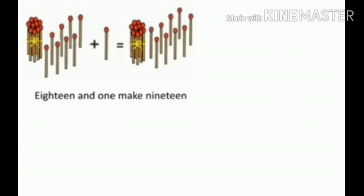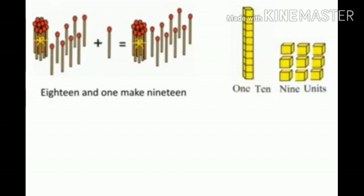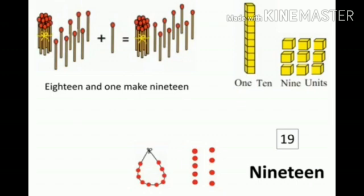Here, 1 bunch of math sticks is there — that is, 10 math sticks. With 8 math sticks, 18 plus 1 math stick equals 19 math sticks. 18 and 1 make 19. The 10-group of blocks is 1 ten and 9 blocks is 9 units. 10 bits of 1 ten and 9 bits is 9 units. That is, 19, and the spelling of 19 is N-I-N-E-T-E-E-N.